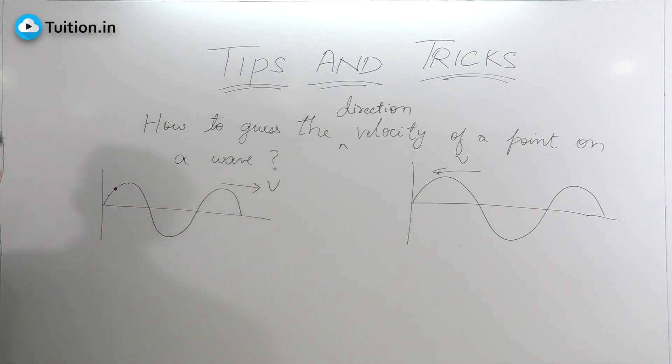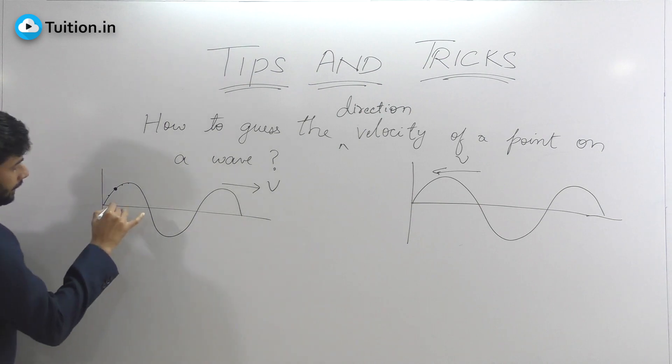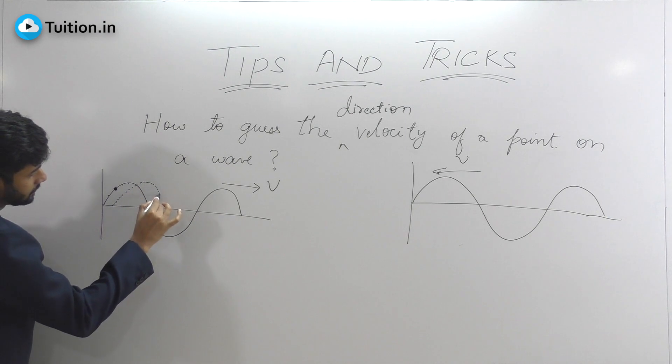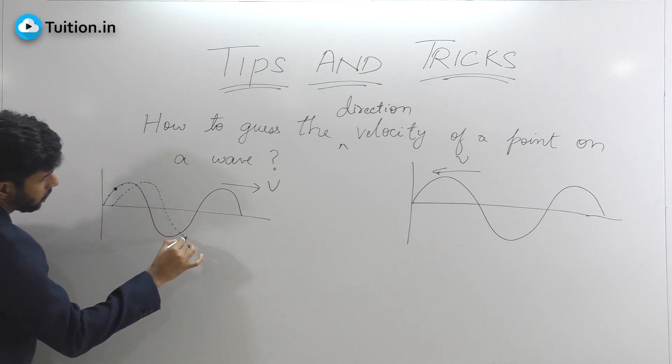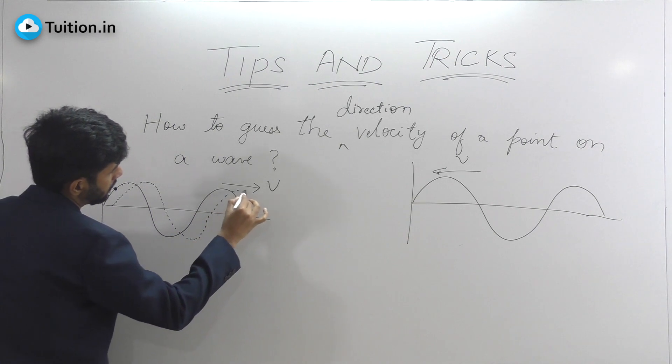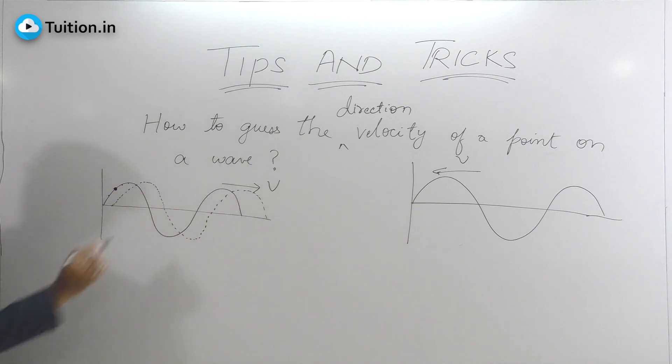This wave is moving that side. That means after a certain instant of time, the wave will look something like this. Everything will get shifted that side. So if it gets shifted this side, this particular point will now be here. Assuming the same x for both, the y initially was this much, y1 and your y2 is here. That means the point has come down. If it has come down, that means the velocity of the point was downwards. That's how you actually visualize it.